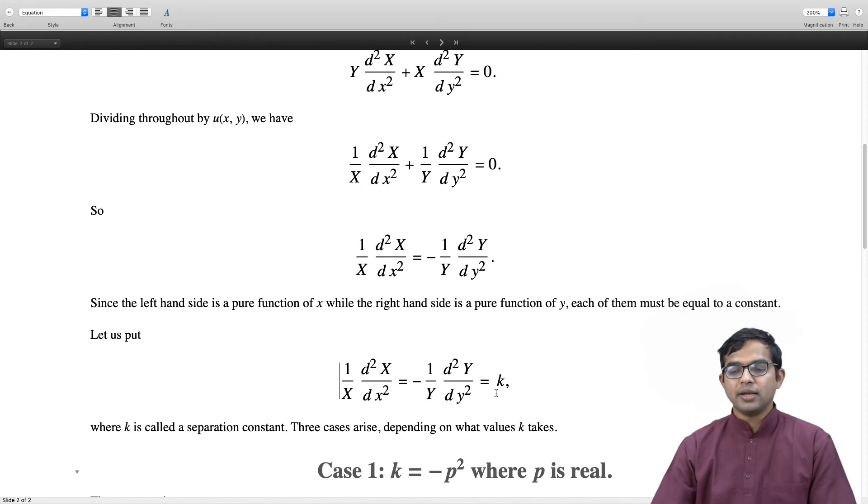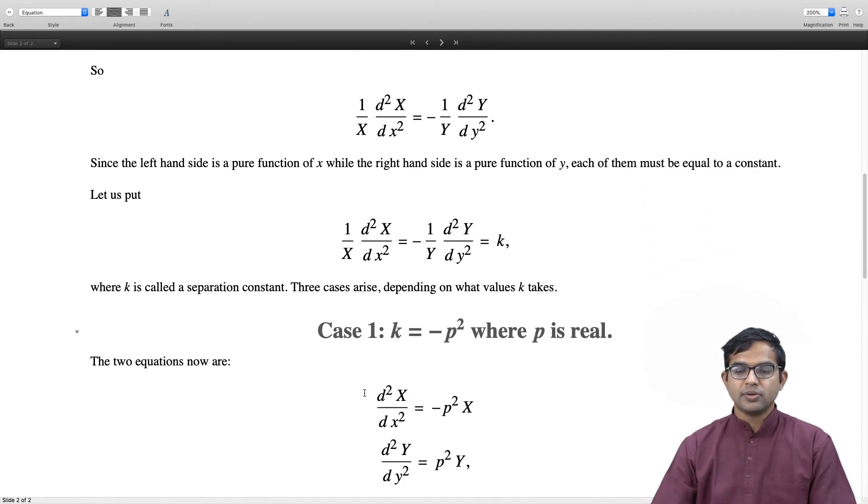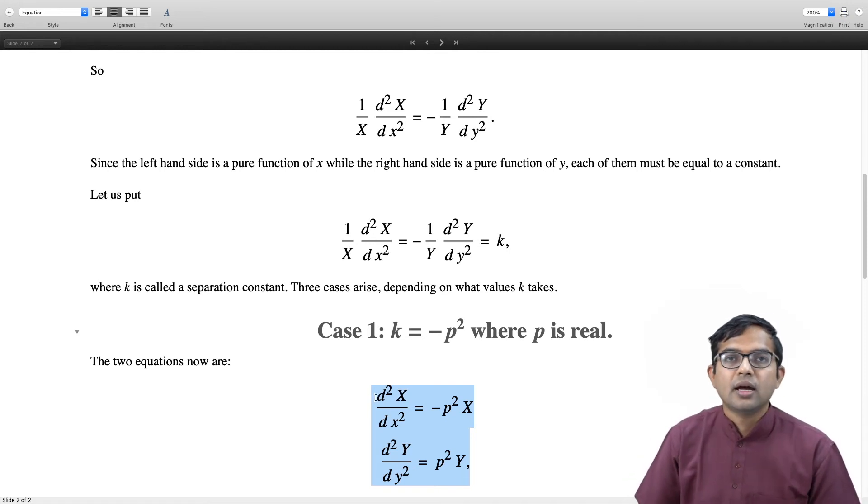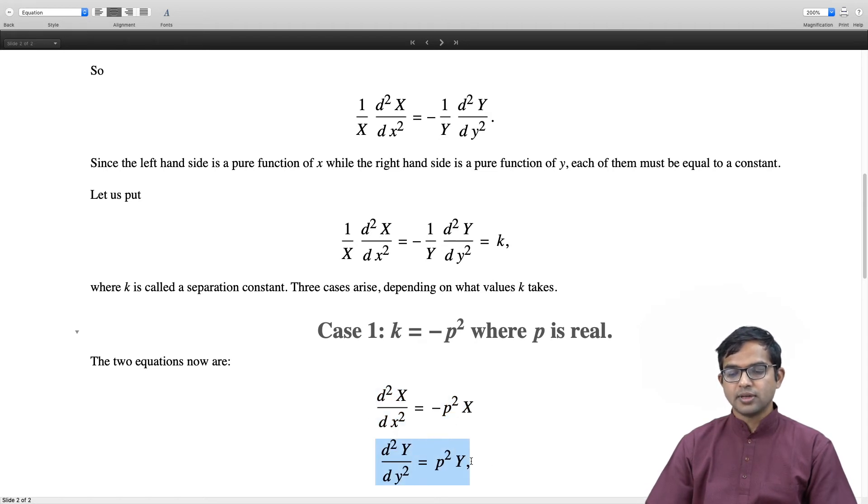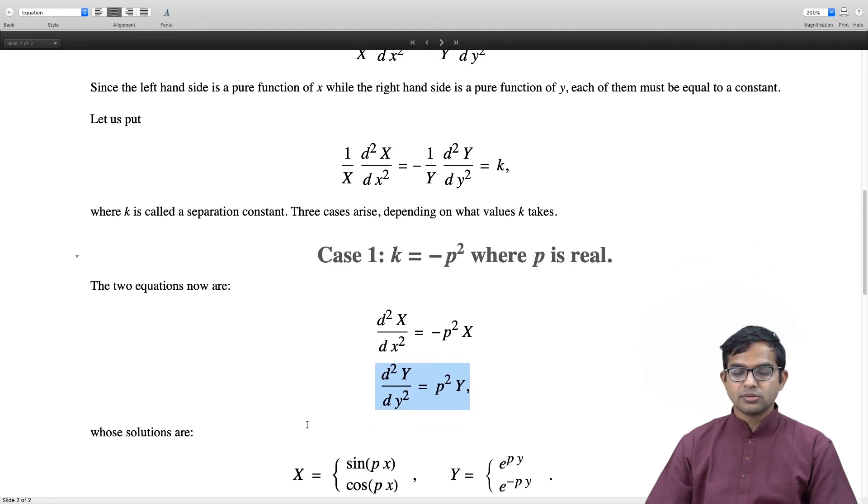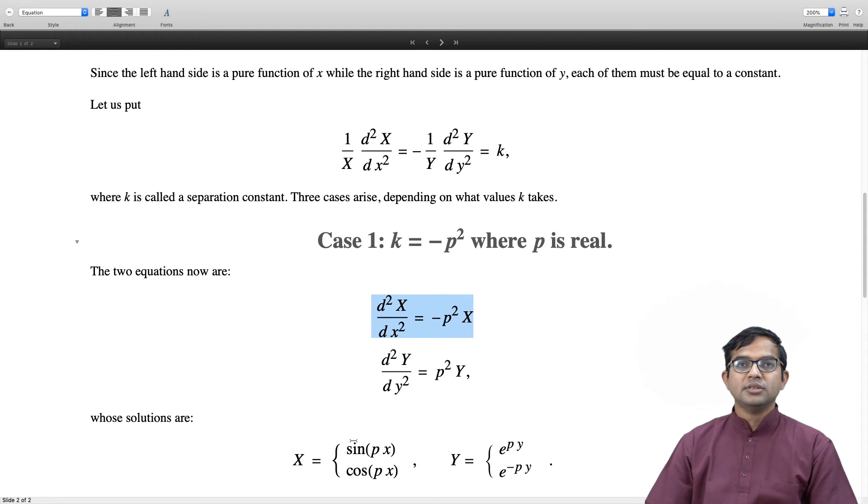If we take k to be -p² where p is real—so it is a negative real number—then we get two ordinary differential equations: d²X/dx² = -p²X and d²Y/dy² = p²Y. The first of these will give us sines and cosines. sin(px) and cos(px) are both solutions.